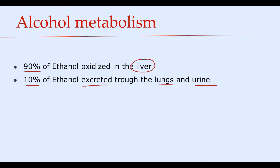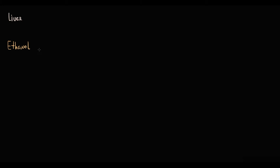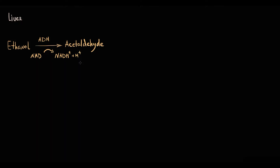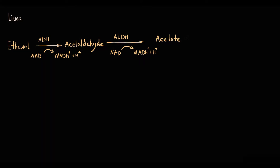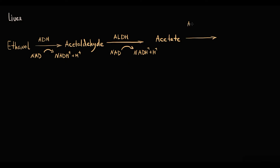When hepatocytes take up ethanol from the blood, alcohol dehydrogenase (ADH) initially oxidizes ethanol to acetaldehyde. In this reaction, NAD+ is used as a cofactor, taking two electrons from ethanol and delivering them to the electron transport chain for energy production. Then the second enzyme, acetaldehyde dehydrogenase — which can be mitochondrial and cytosolic — oxidizes acetaldehyde to acetate. Acetate is then converted by acetyl-CoA synthase to acetyl-CoA, which goes into the Krebs cycle and subsequently into the electron transport chain, resulting in energy production.